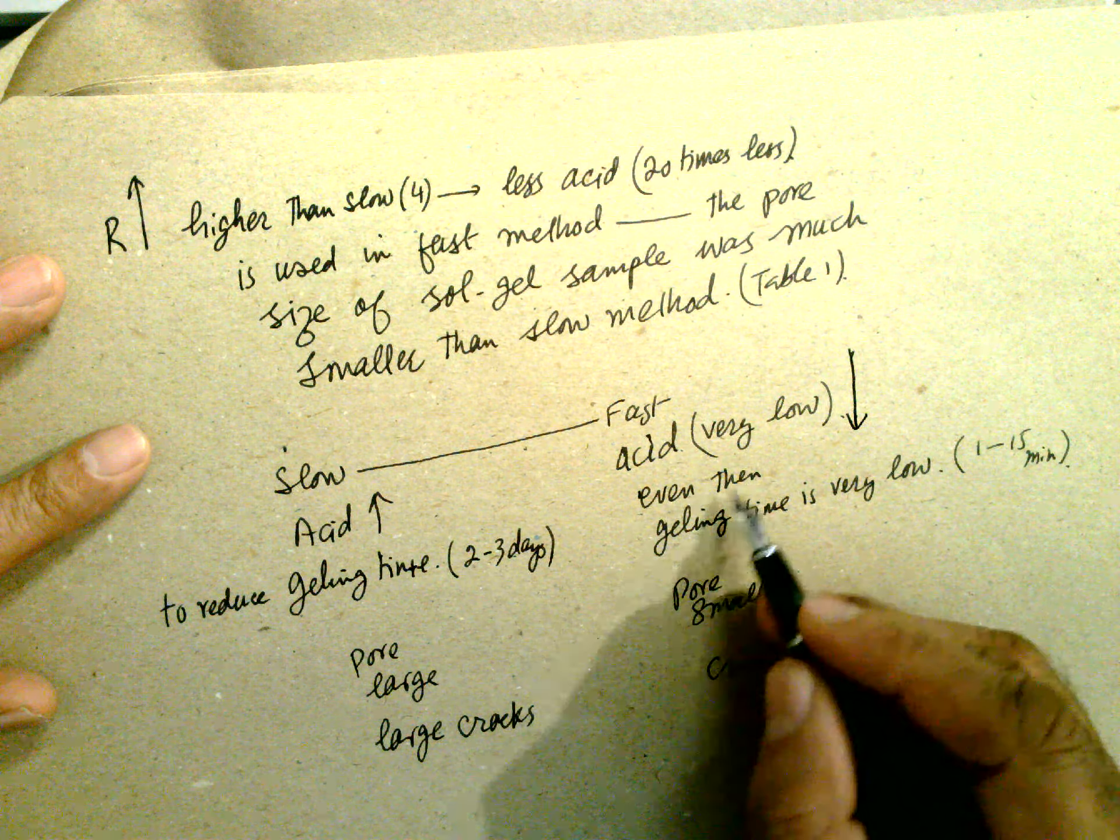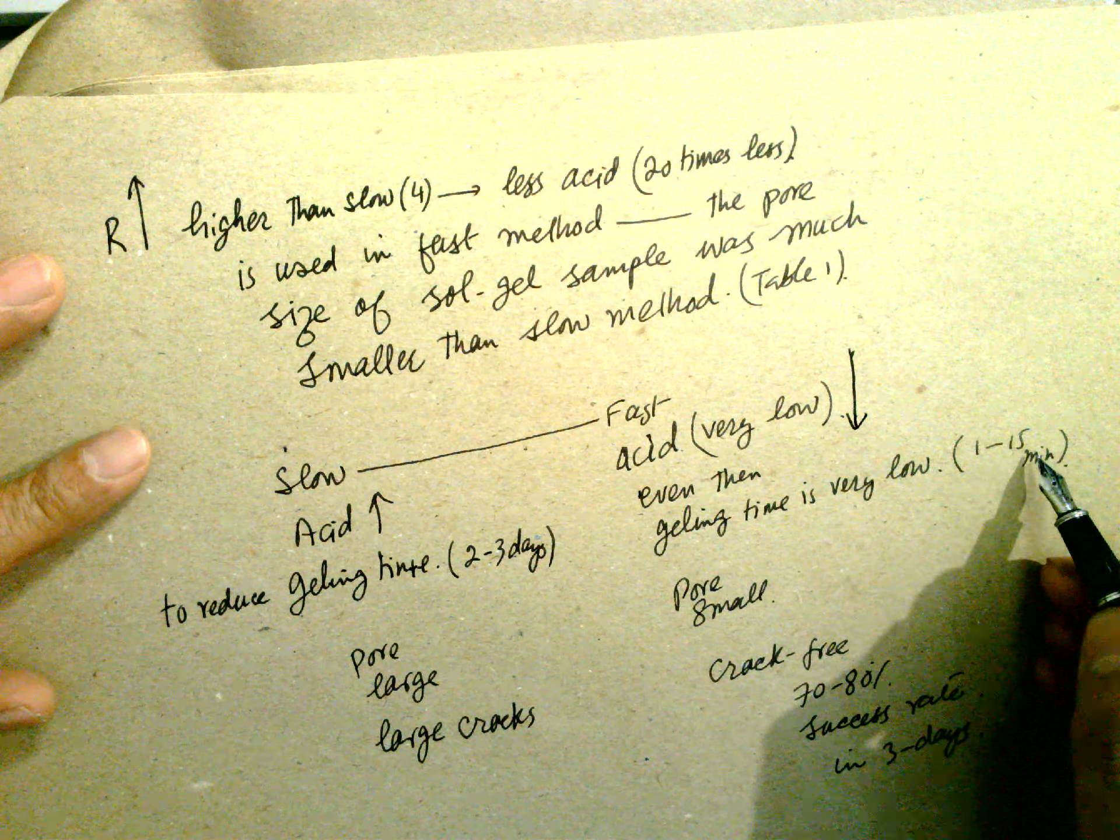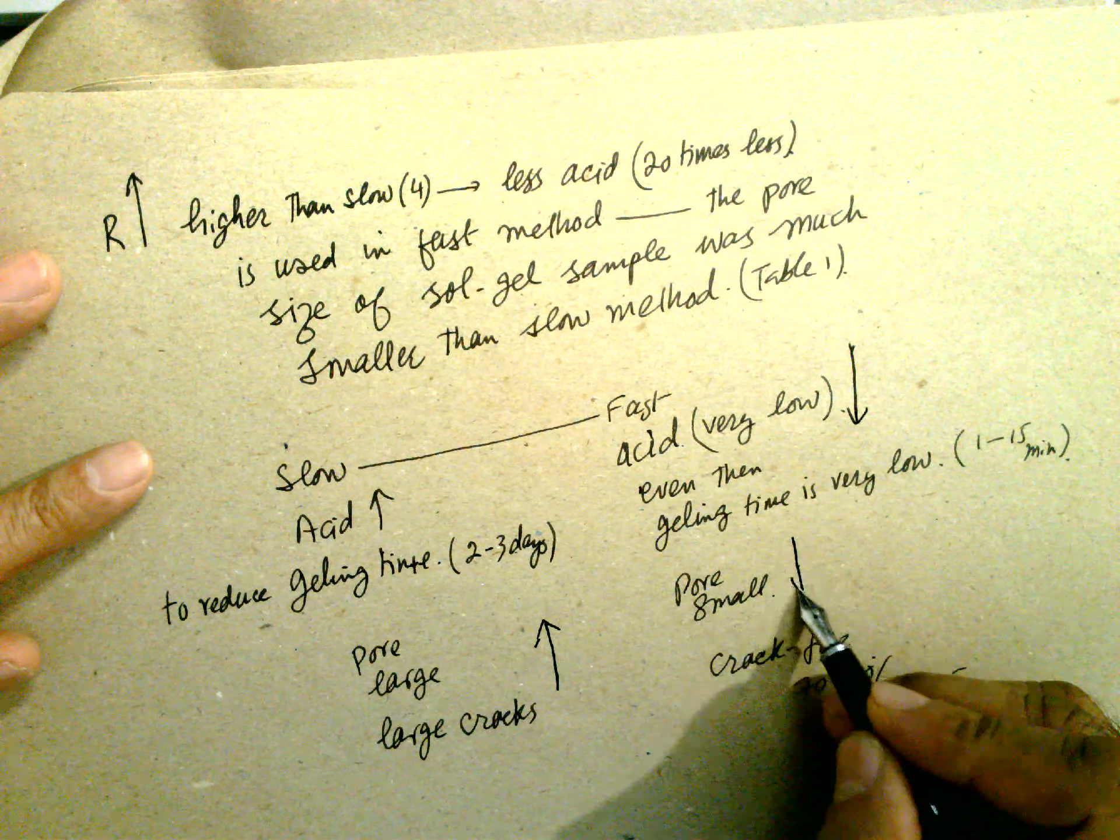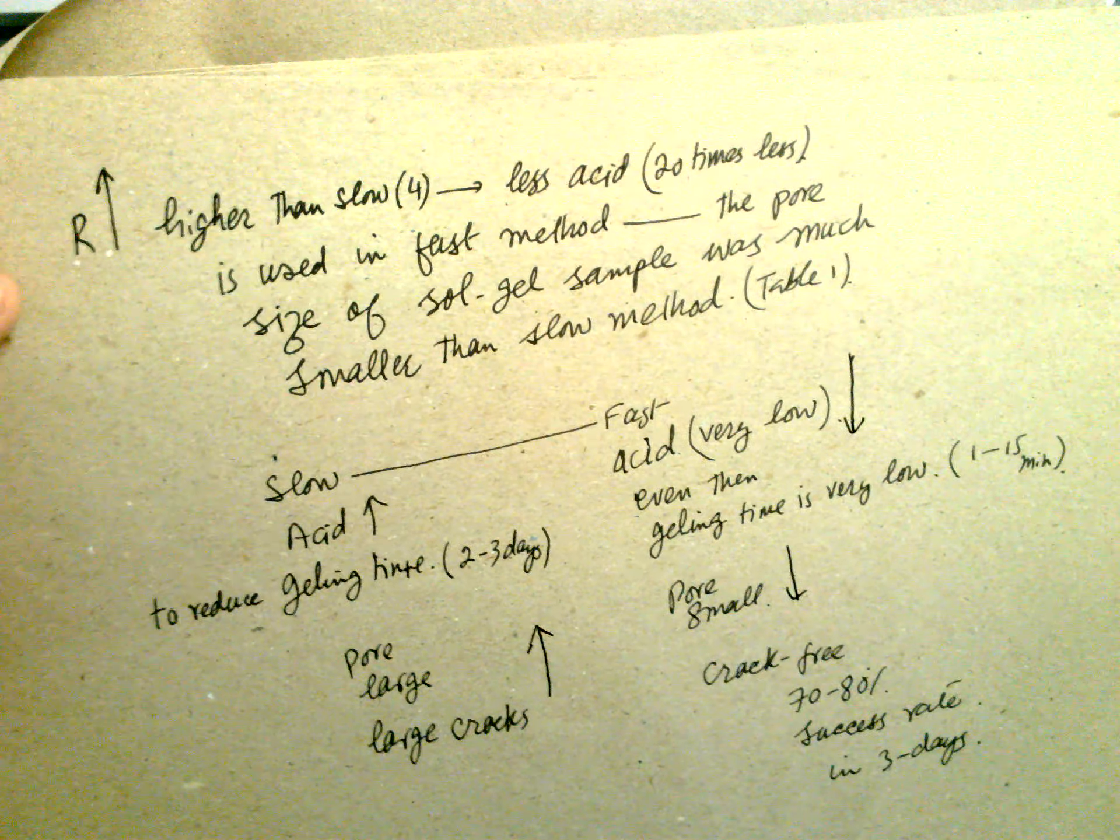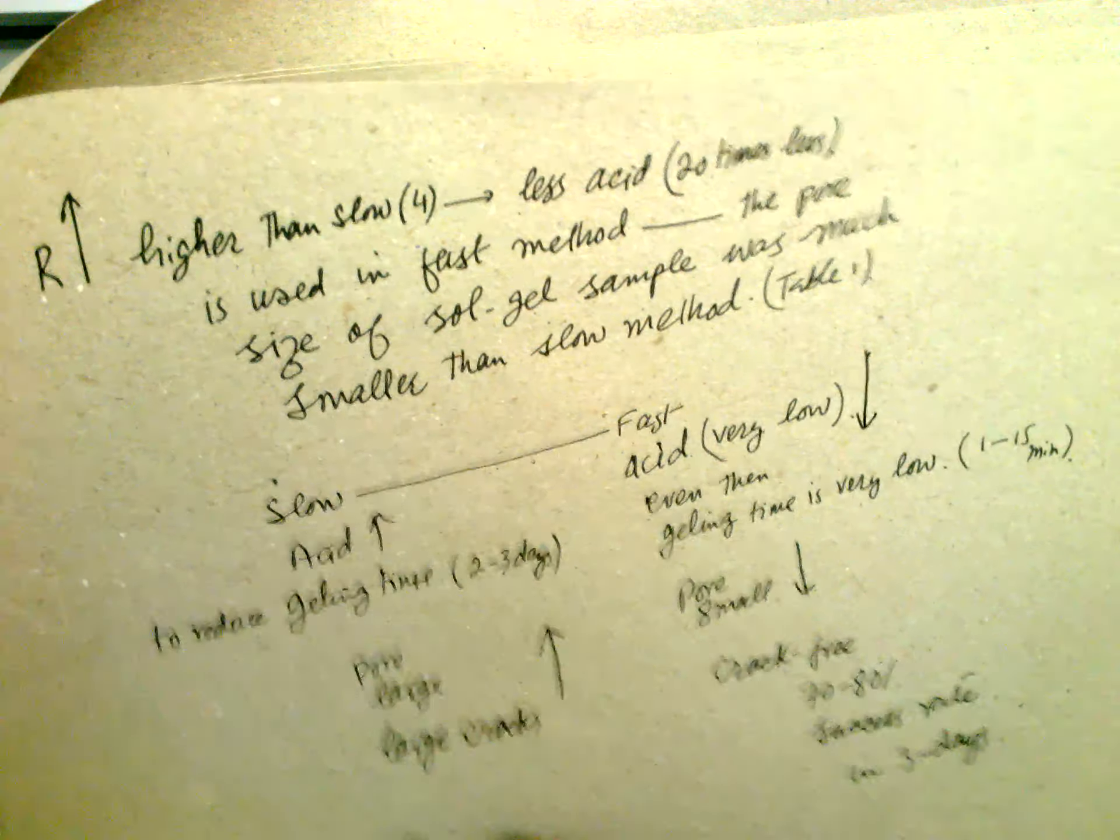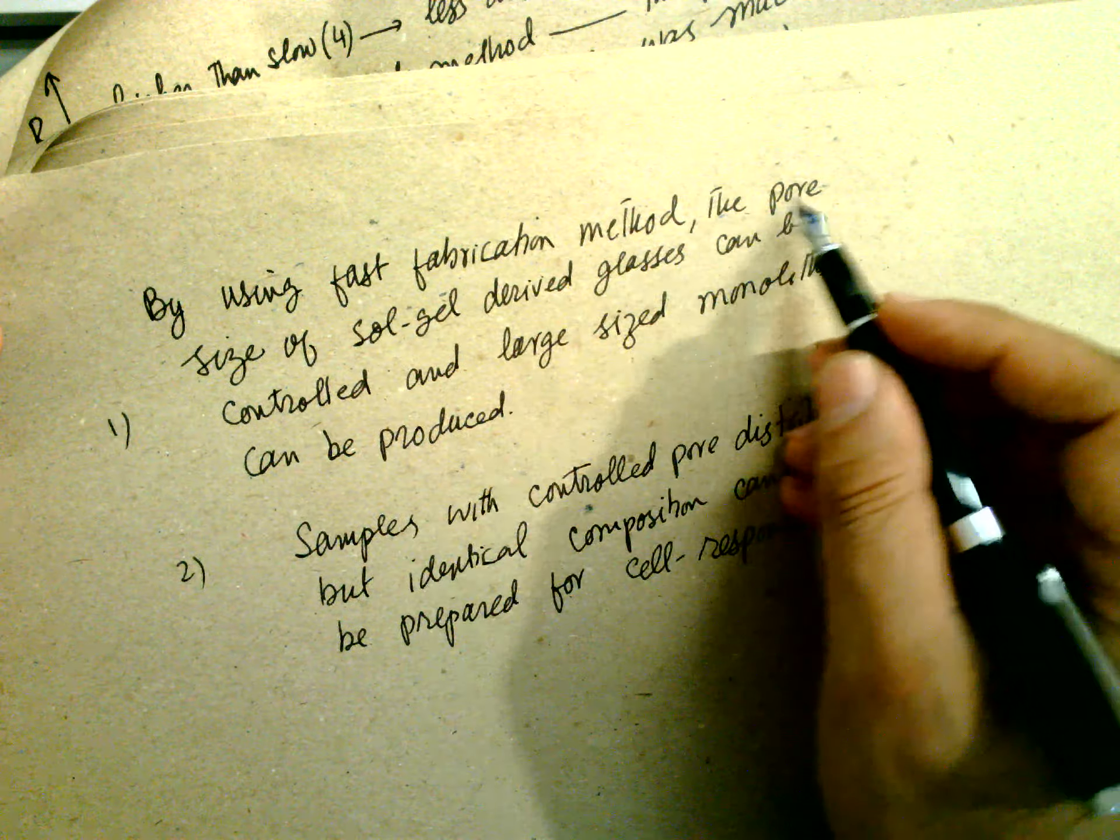To reduce the gelling time, acid is used high, 2 to 3 days, even very low. Even then the gelling time is very low, for 10 to 15 minutes. Pore size is very large, and pore size is very small, and crack free, 70 to 80% success rate, and in 3 days are obtained.